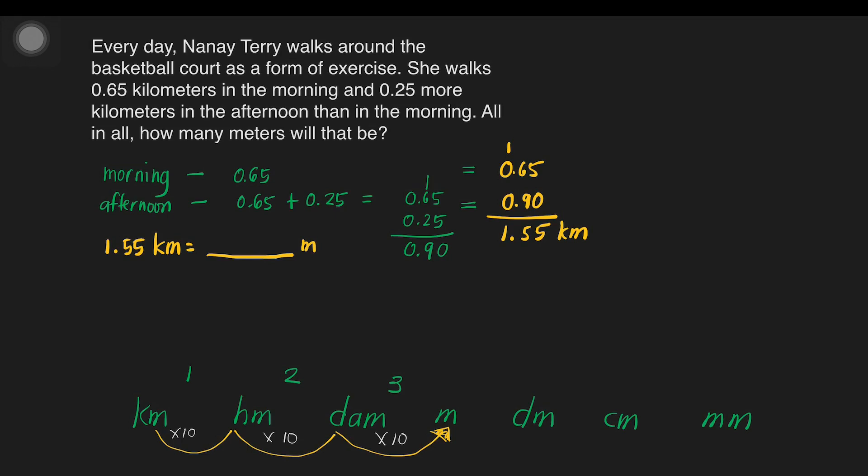Now, we can show our solution at the right side of our page. That is 1.55 kilometers is how many meters. Now, let's proceed to multiplication. That is 1.55 times 1,000. Why is it 1,000? Because a while ago, we have 3 steps. That is 10, times 10, times 10. So, we have 1,000.